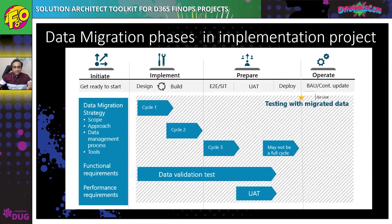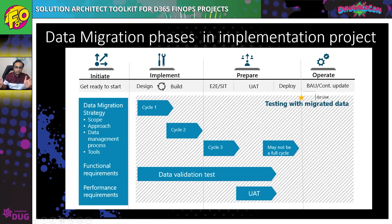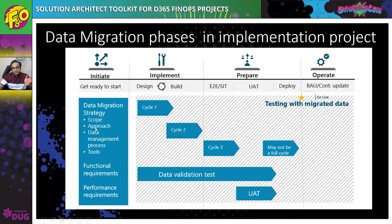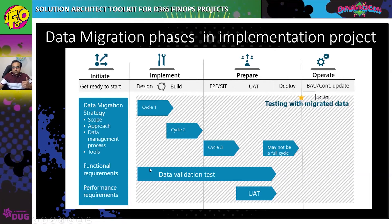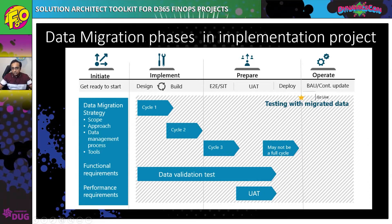An important point is that data migration is not a phase that happens towards the end of the project — it is an activity that happens throughout the entire project implementation. From project initiation to go-live, data migration is a continuous activity because you start planning, you start designing, you start doing some testing, and it is an iterative approach. It is very unlikely that you will successfully load all the data in one go — it requires iteration and refinement.